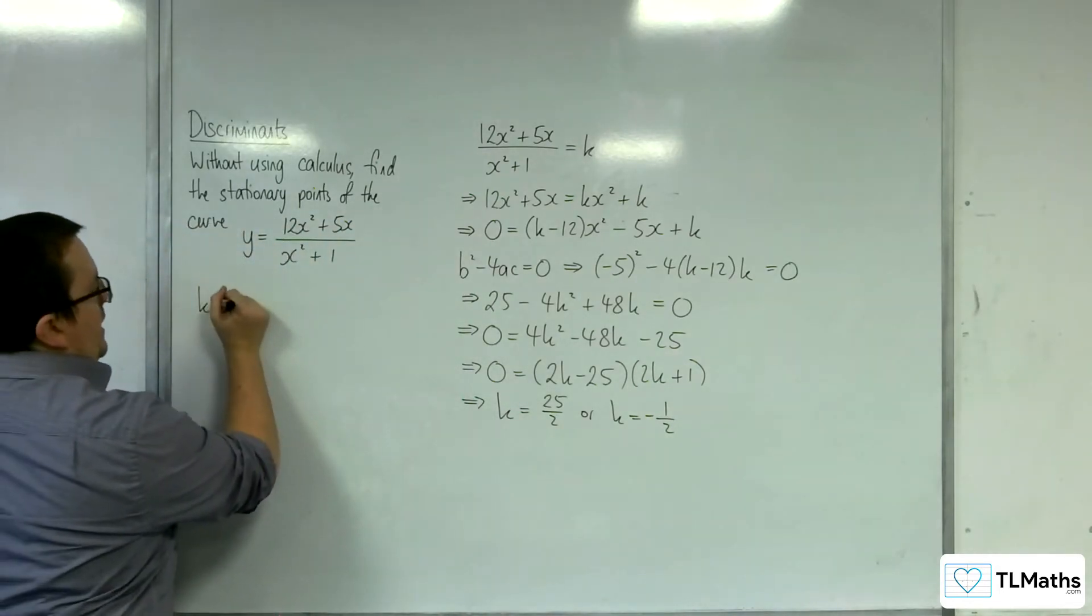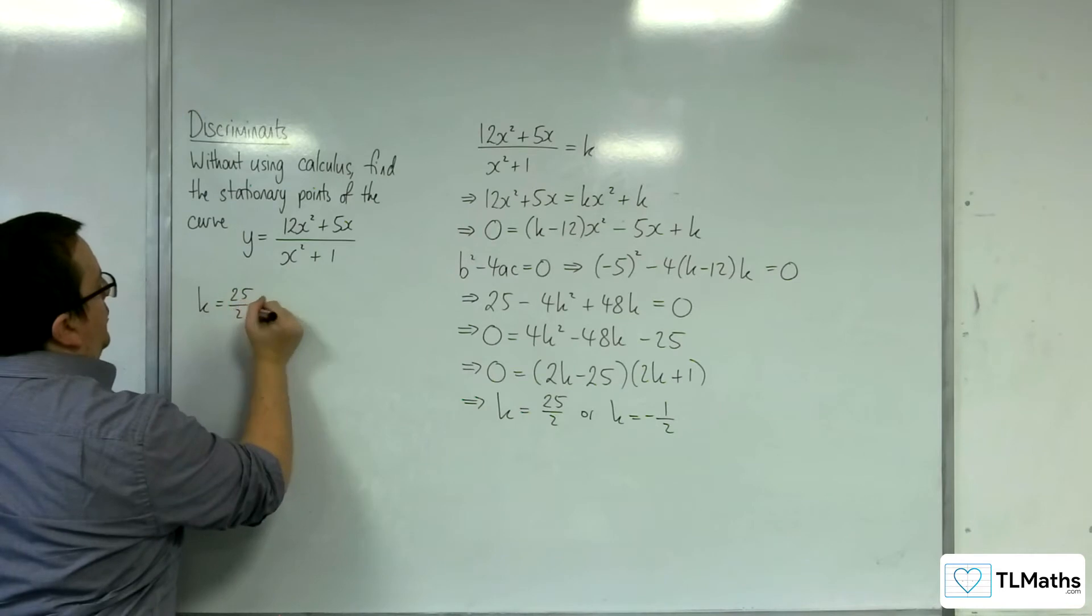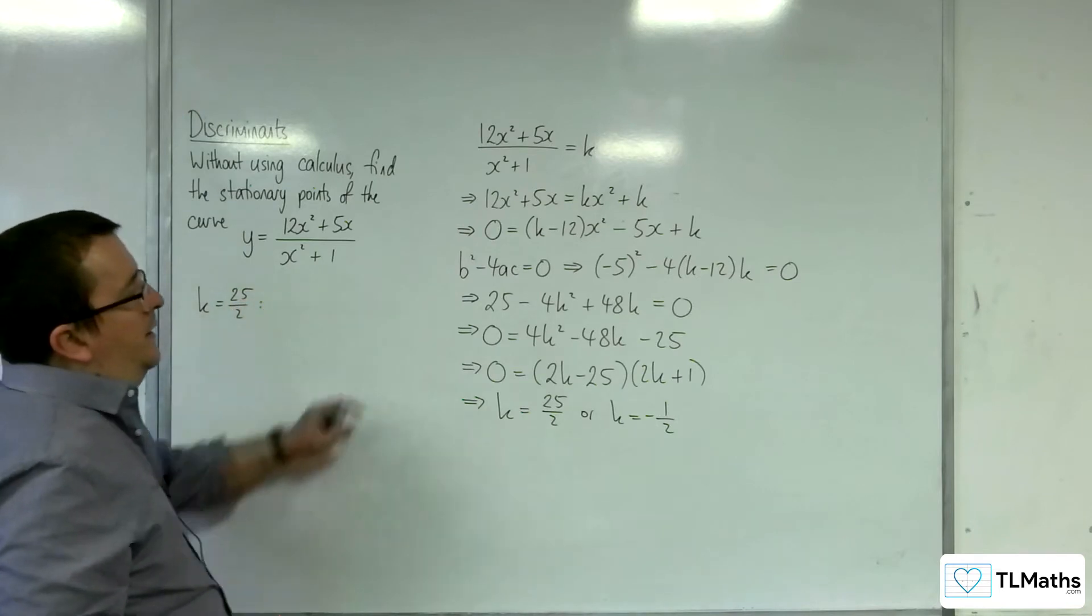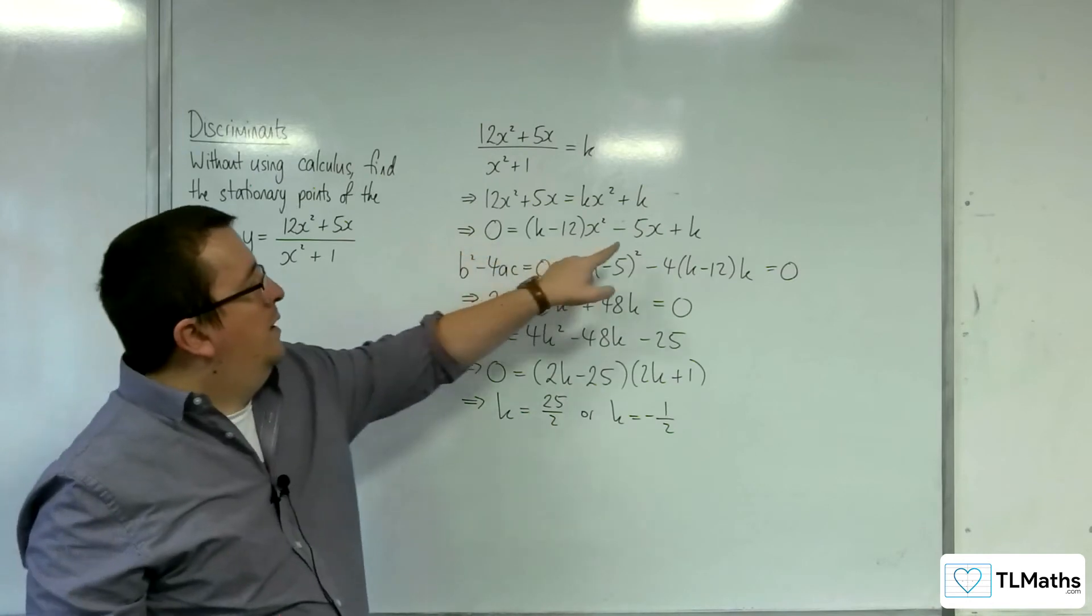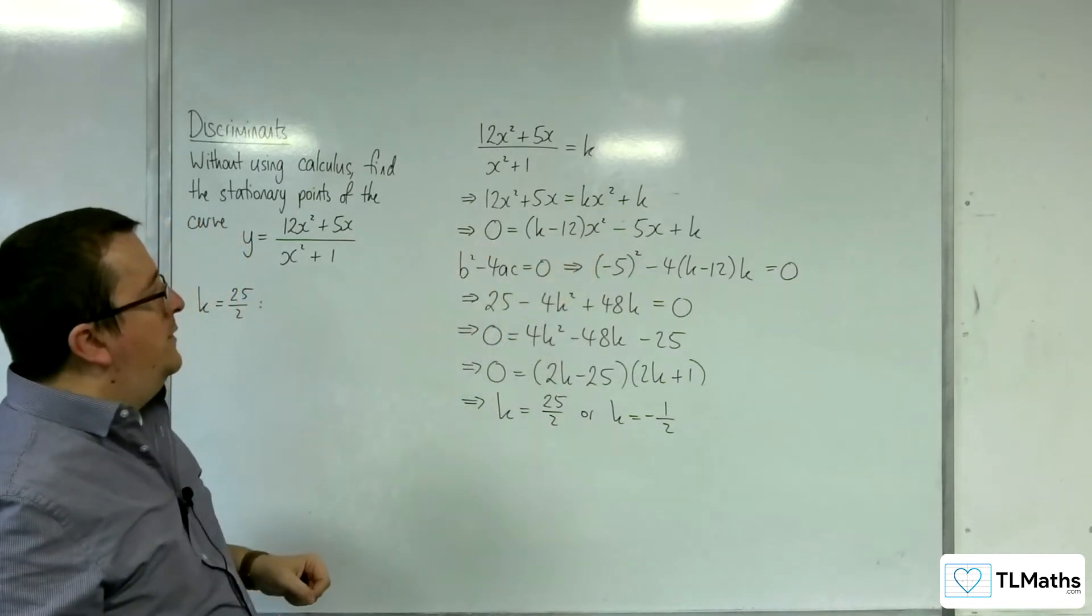Now we need to work out the x values. We're going to take the k values in turn, substitute them into this quadratic, in order to get a quadratic that I can then solve for x.